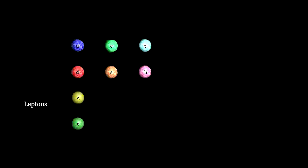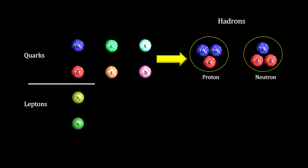We have the small light particles, like the electron and the neutrino, called leptons. And we have the quarks that make up the heavy particles, like protons and neutrons, called hadrons.